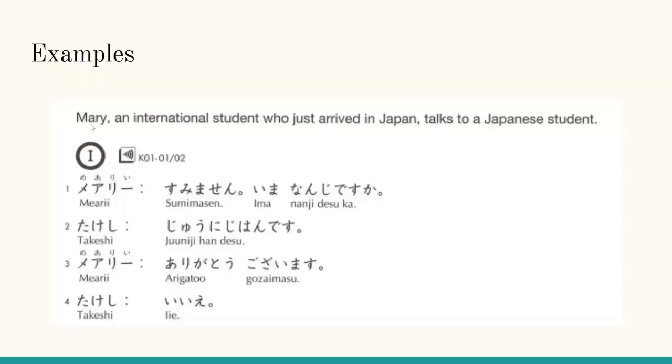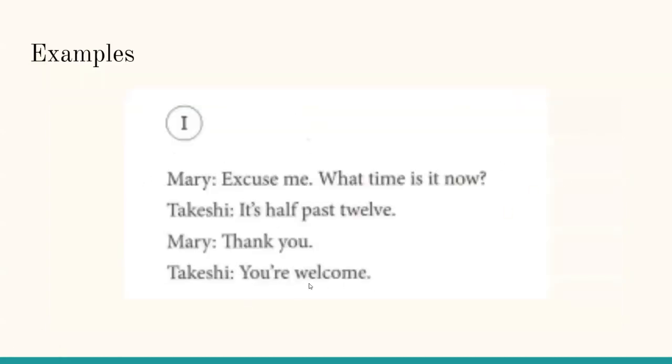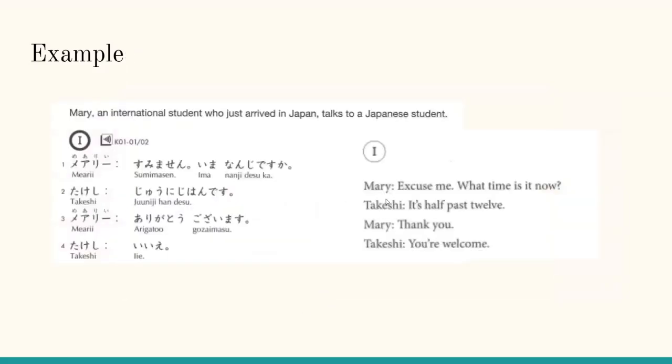Examples: Mary, an international student who just arrived in Japan, talks to a Japanese student. Meari: Sumimasen, ima nanji desu ka? Takeshi: Juuni-ji han desu. Meari: Arigatou gozaimasu. Takeshi: Iie. This is the translation to the four sentences shown in the last slide. Sumimasen means excuse me. Ima nanji desu ka means what time is it now?